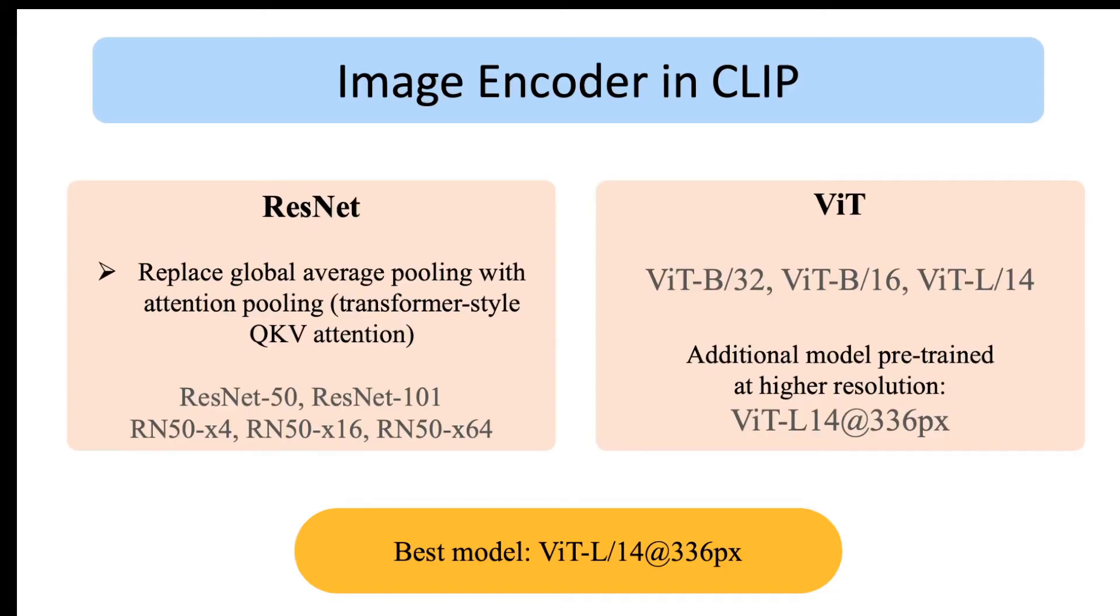For the image encoder, CLIP explored two families of models: ResNet-based models and ViT-based models. They experimented with five different ResNet models and applied some improvements by replacing the global average pooling with transformer-style attention pooling. For the ViT models, they experimented with three models: two ViT-B models and a ViT-L. In addition, they also added an extra version of the ViT-L that is pre-trained at higher resolution 336 pixels, and in fact this model achieved best performance.